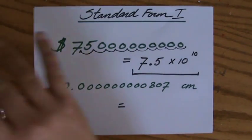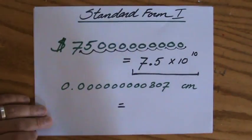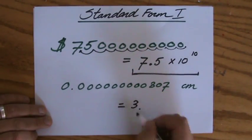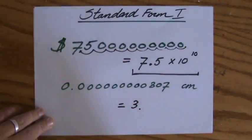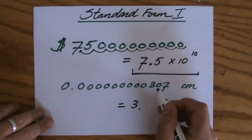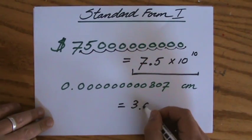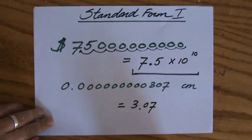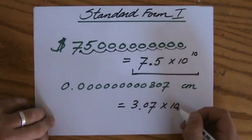So what do I do? Where is my first number? There is a three. So I write a three point and then I let it follow by the rest of the numbers. I have a seven there, so zero seven. Okay, times 10 to the power.